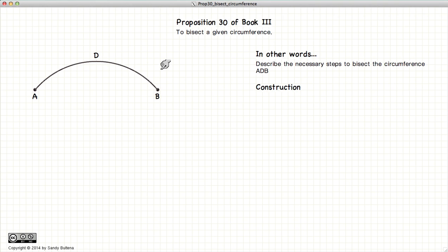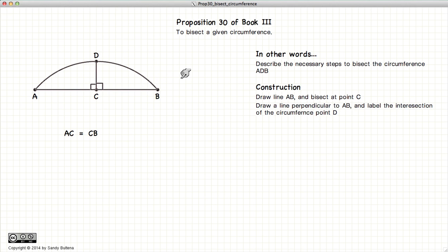So to do this, first let's join line AB and bisect it at the point C, so AC is equal to CB. Now let's draw a line perpendicular to AB through the point C and label the intersection of this straight line with the circumference as D.